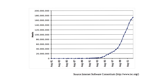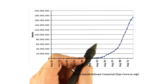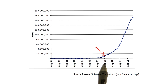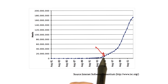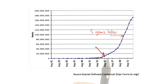The internet continued to grow, but the number of computers on the internet really didn't start to take off until the mid-90s. Around August 1995, there were about 10 million hosts on the internet. Five years later, there was an order of magnitude more hosts — more than 100 million.